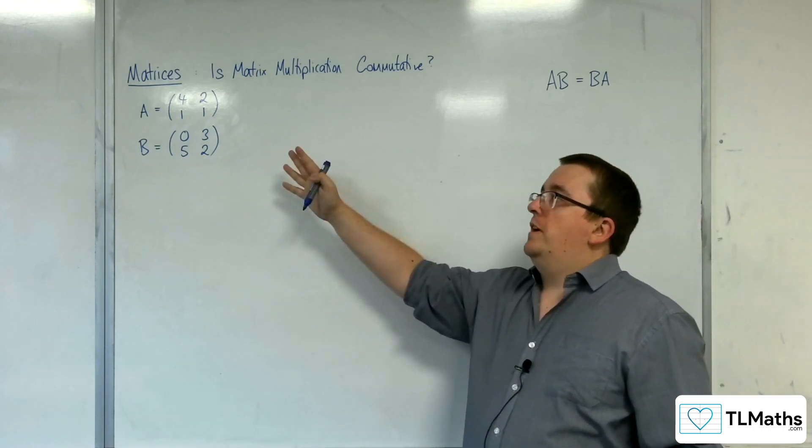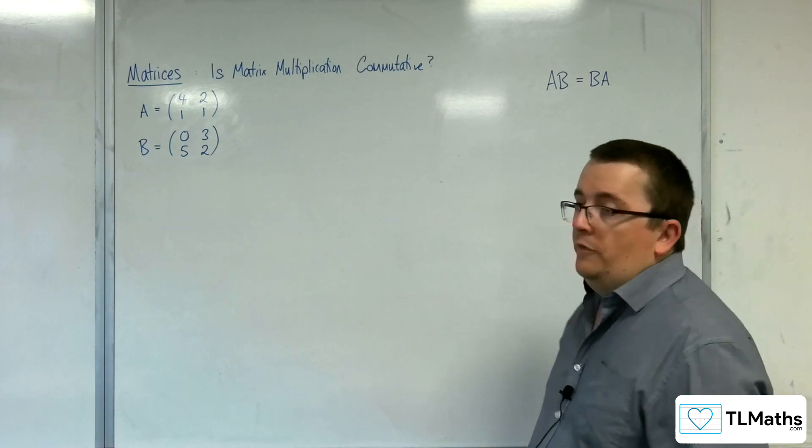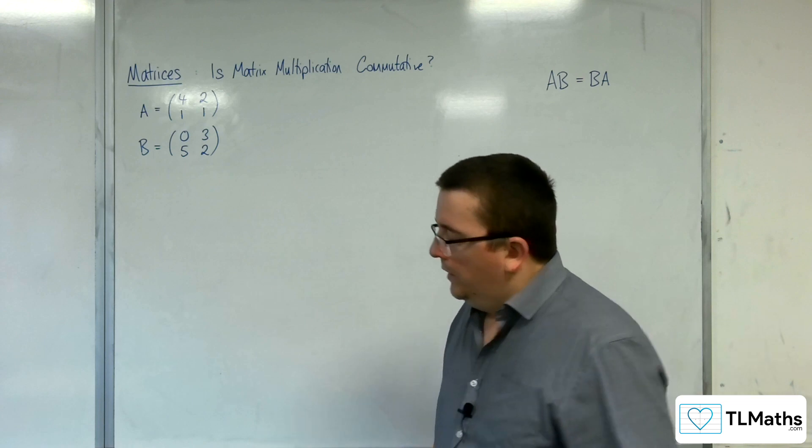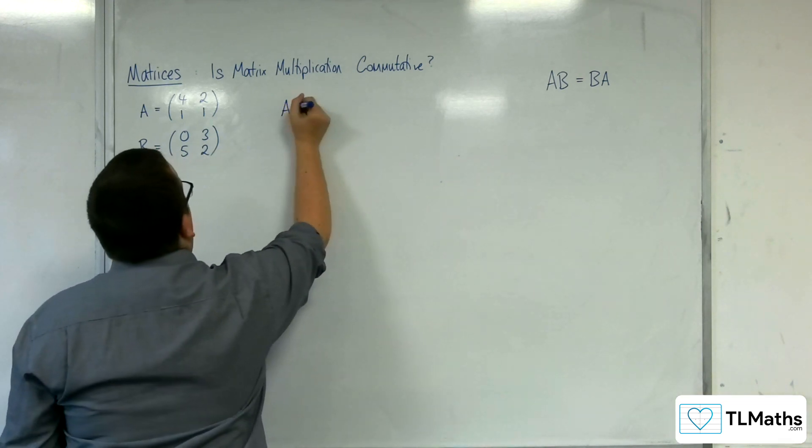We're going to try A is (4,2; 1,1) and B is (0,3; 5,2). And we're just going to see what happens.